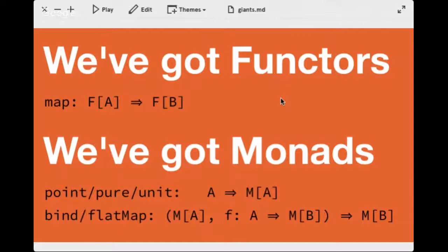Well, we have a few already — some well-known ones. Probably the most well-known are functors and monads. A quick refresher: a functor is simply an operation that supports the map operation. You have some type F of A, you do a map, and it'll give you F of B. There are some laws relating to identity and composition that apply, but within the scope of this talk, a functor supports a map operation.